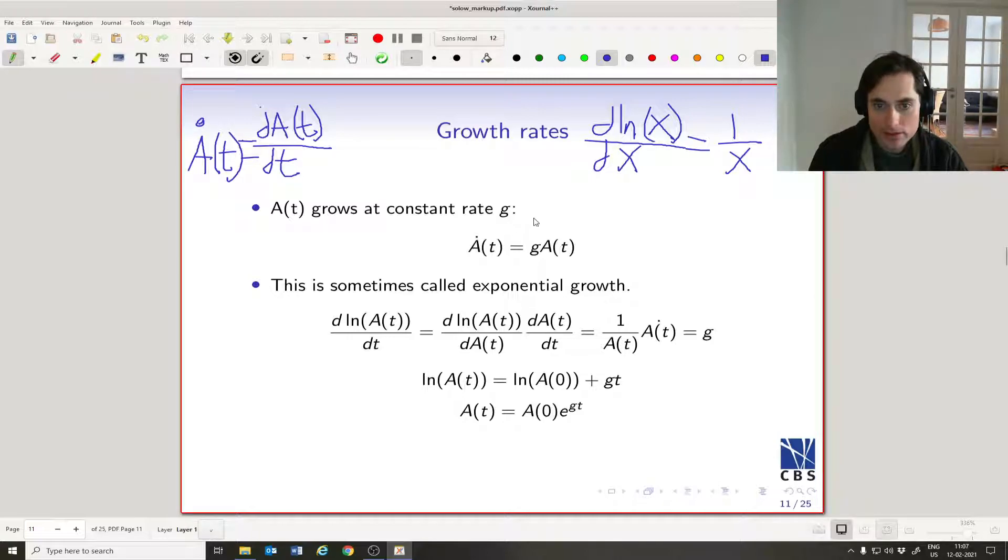And if you look up here at our definition of g, basically g is equal to A-dot(t) divided by A(t). Here we have A-dot(t) divided by A(t). So you can see that the derivative of log A(t) with respect to dt is equal to g based on our definition. This is really a definition of what a growth rate means. I'm gonna write that here: definition.